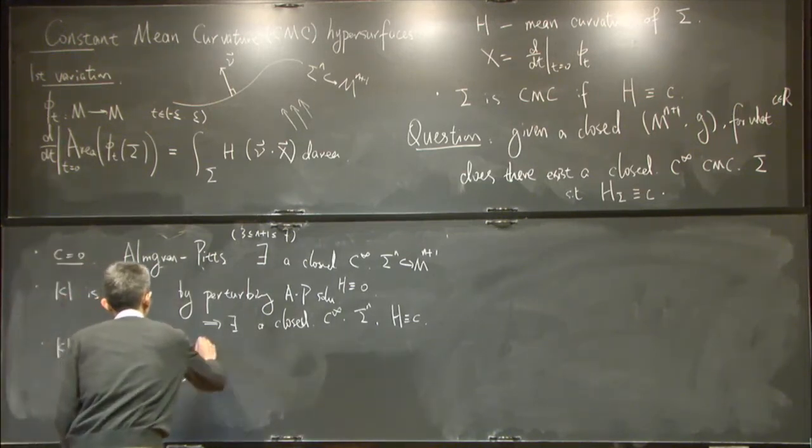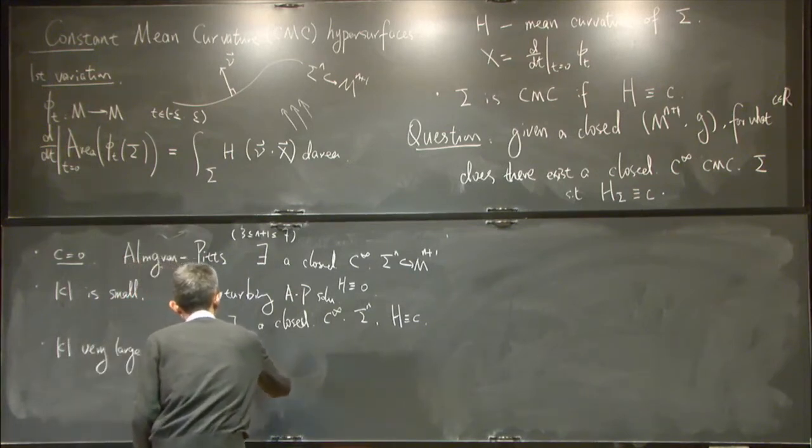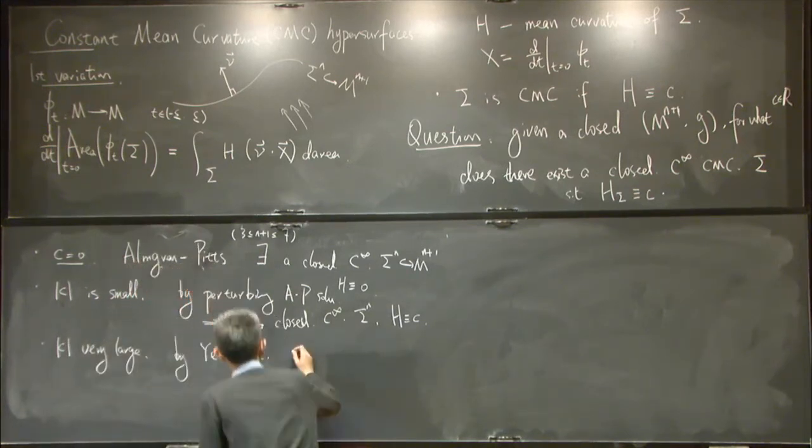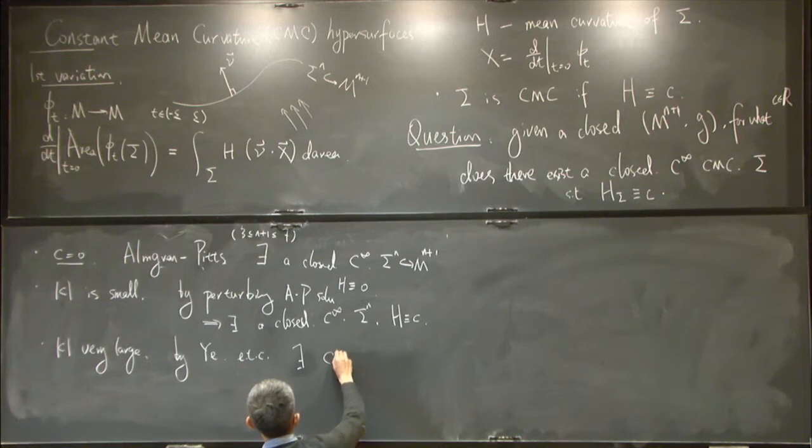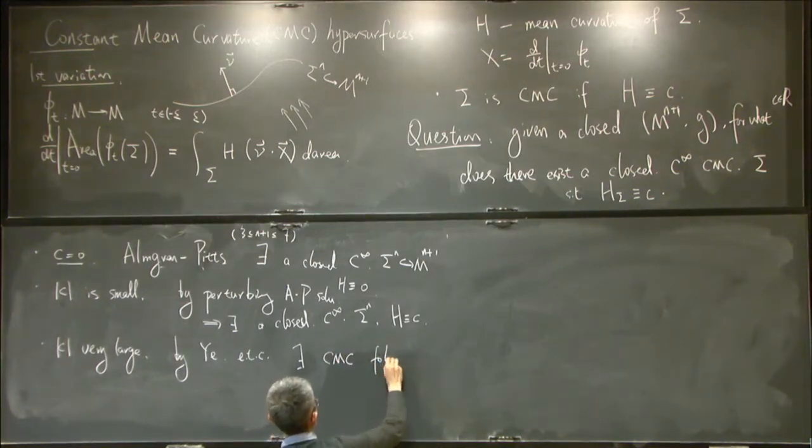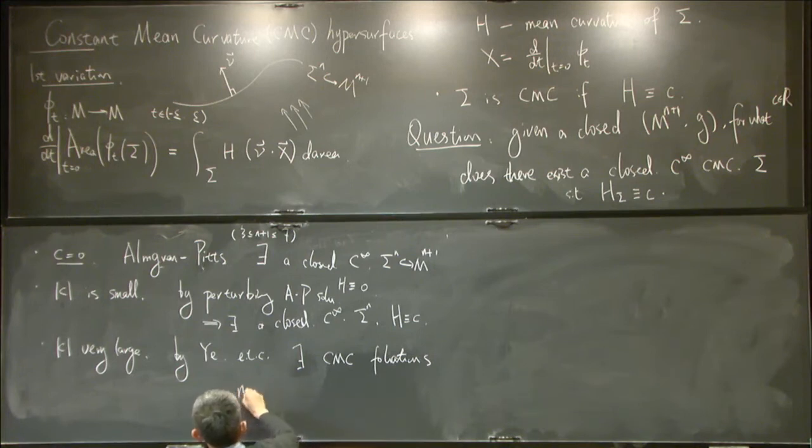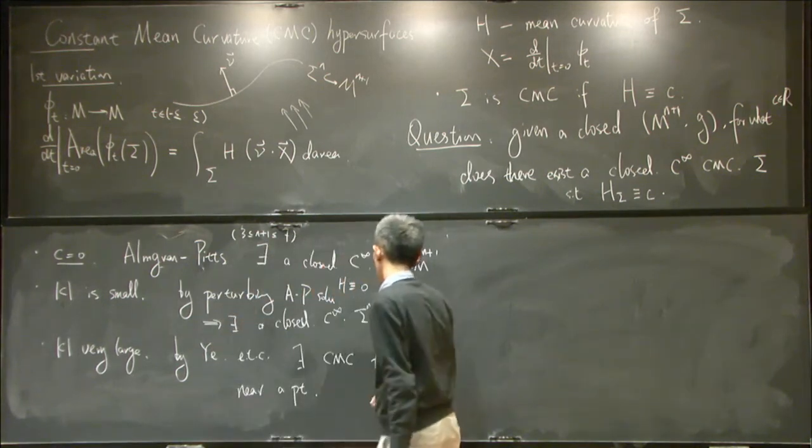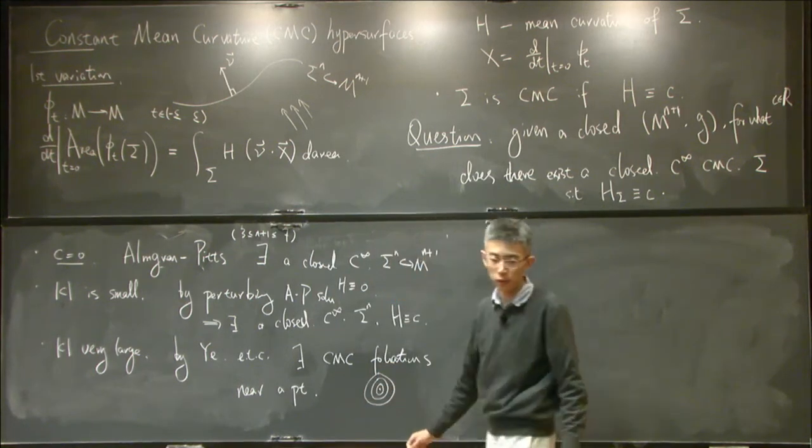So by the results, and some other people's later, there exists CMC foliations near a point with certain assumptions.